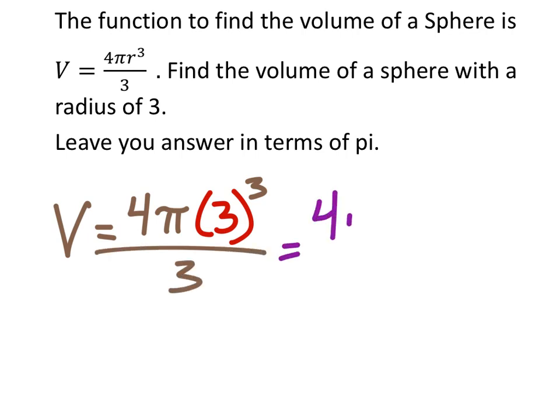So 3 cubed, so I got 4 pi, 3 cubed is 27. Then I would divide this by 3.